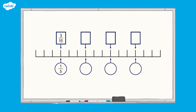Sometimes you'll see fractions on a number line like this one. This number line is counting up in fifteenths, so the first thing we need to do is fill in the missing fractions above the number line by counting up in fifteenths. By counting up in fifteenths we can see that the missing fractions are six fifteenths, nine fifteenths and twelve fifteenths.